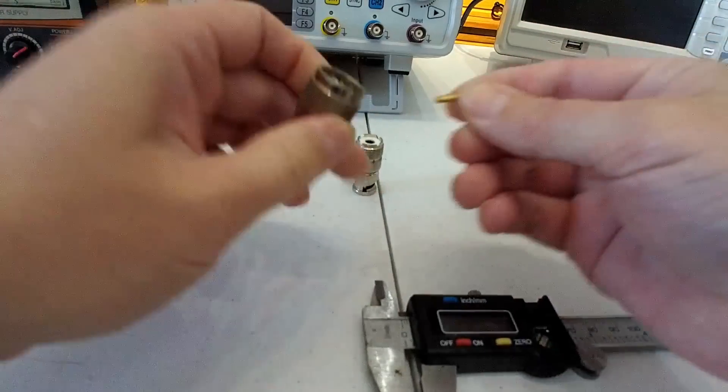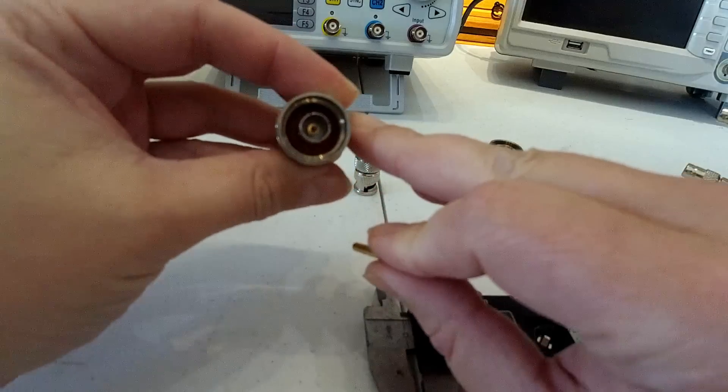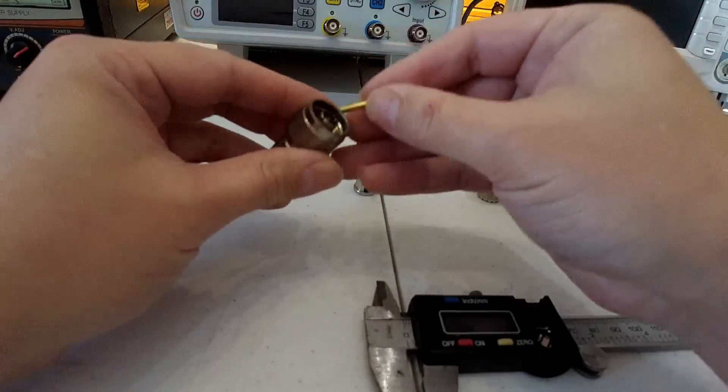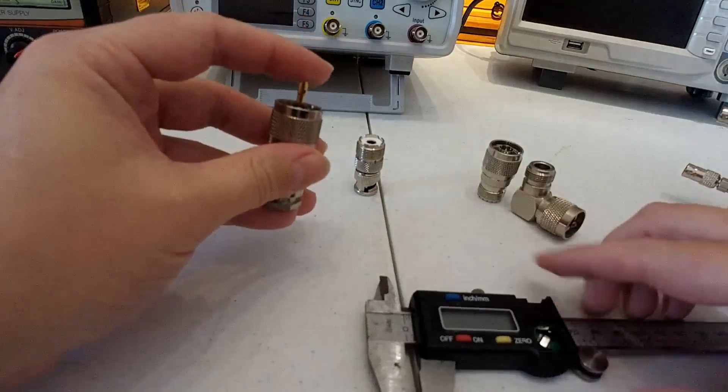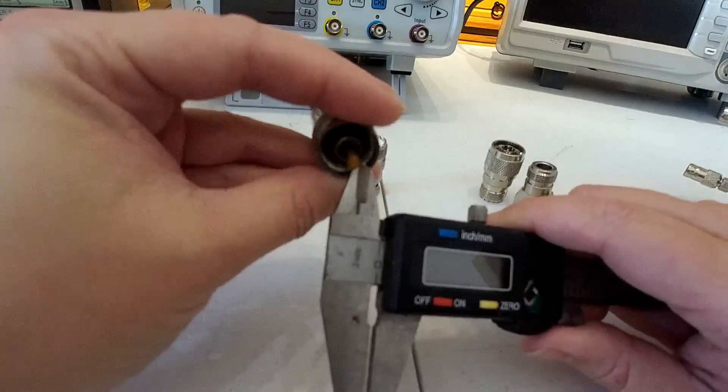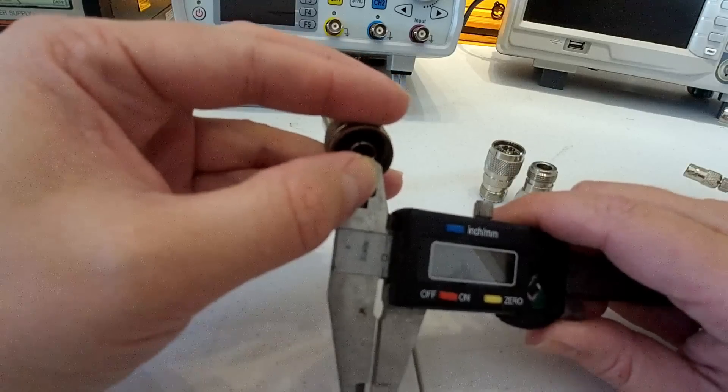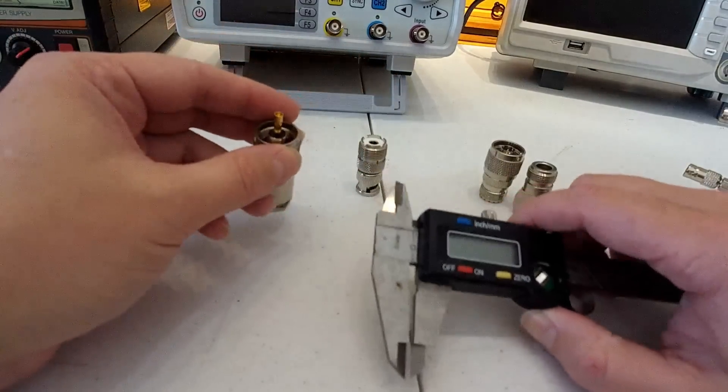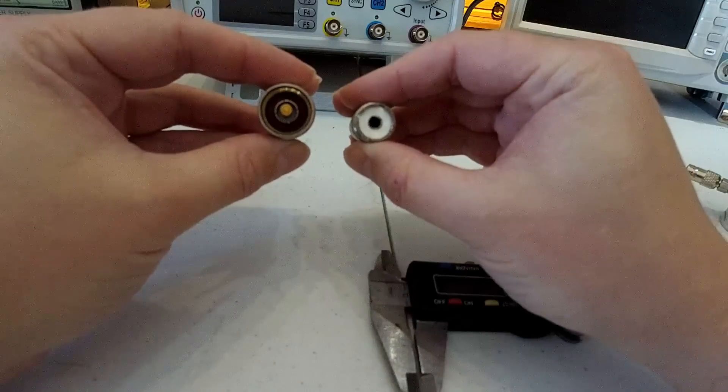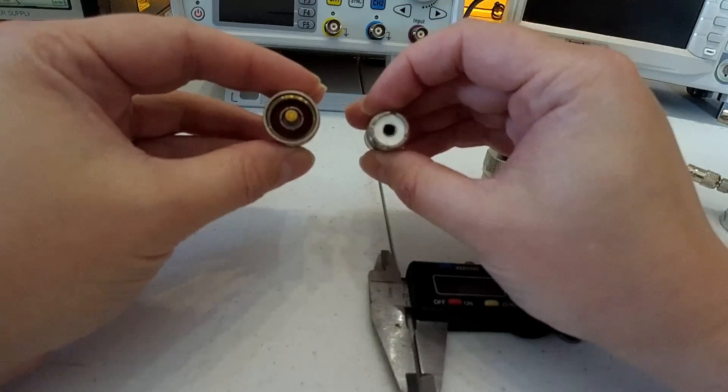The N connector is a lot harder to measure because you actually need the female pin inserted, because the male pin necks down so that the female could fit in. So to measure this we have to put the female pin in place and then we'll measure the distance. It's a very tricky thing to do, but in the past I've agreed upon the distance is about 1.5 millimeters.